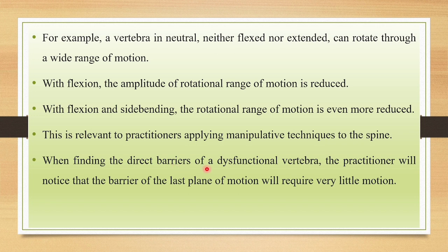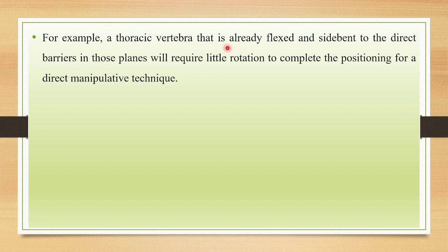This is relevant to practitioners applying manipulative techniques to the spine. When finding the direct barriers of a dysfunctional vertebra, the practitioner will notice that the barrier of the last plane of motion will require very little motion. In the Third Law, if one motion is occurring in one plane, the remaining plane motions will be restricted or reduced. For example, if there is flexion happening in the thoracic spine, the lateral flexion as well as rotation range will be less compared to the flexion range. A thoracic vertebra already flexed and side bent means very little rotation is needed to complete positioning for direct manipulative techniques.